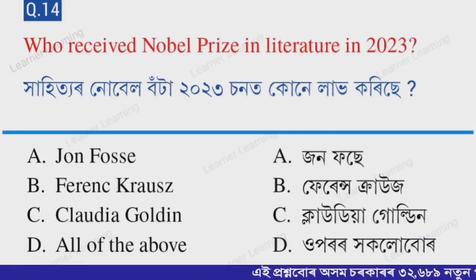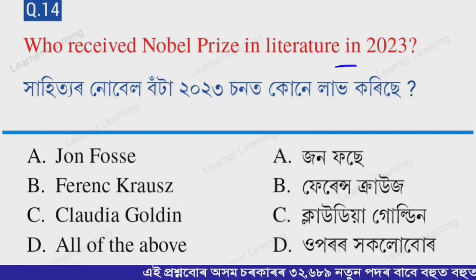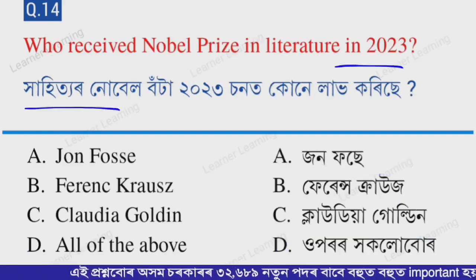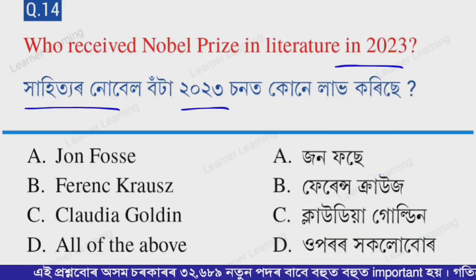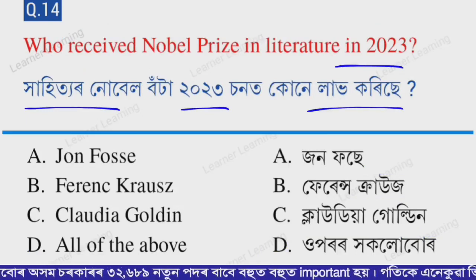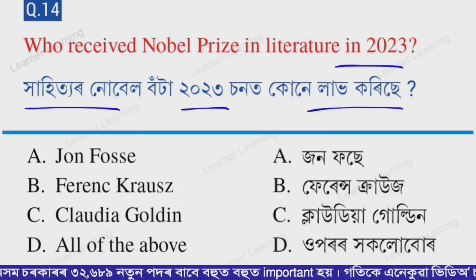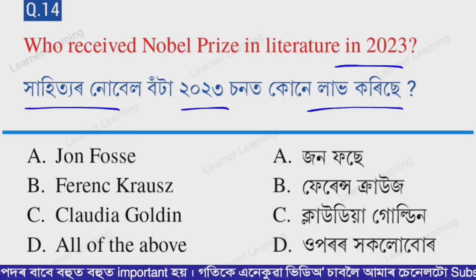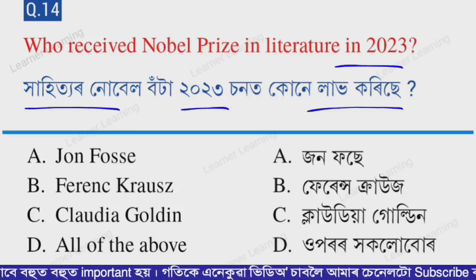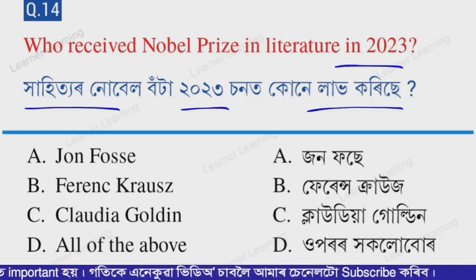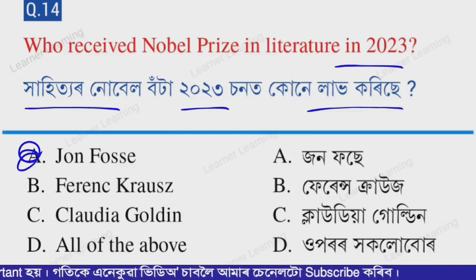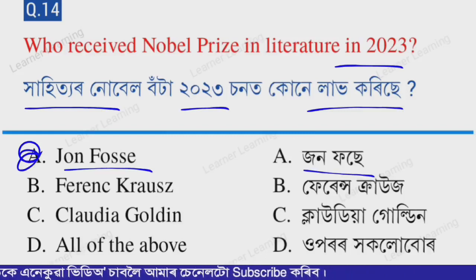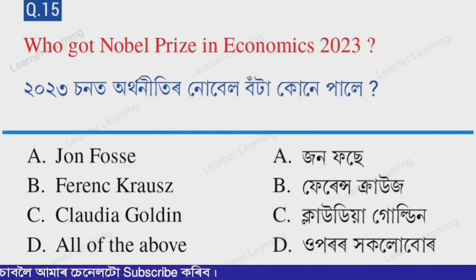Next question: Who received the Nobel Prize in Literature in 2023? Options: A — Jon Fosse, B — Ferenc Krausz, C — Claudia Goldin, D — All of the above. The correct option is option A — Jon Fosse. Jon Fosse received the Nobel Prize in Literature in 2023.